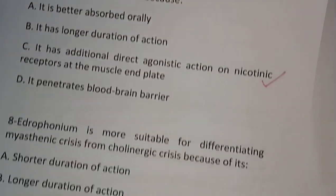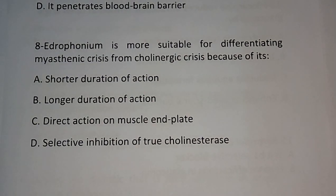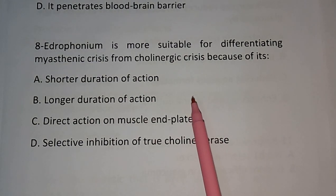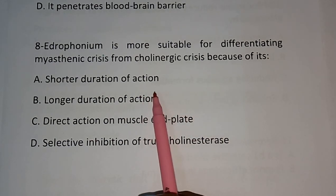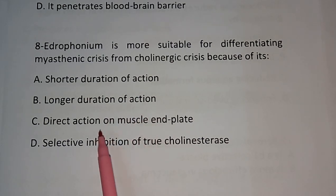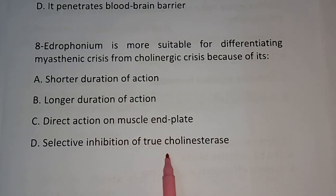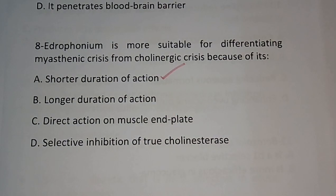Question number eight: Edrophonium is more suitable for differentiating myasthenia crisis from cholinergic crisis because — (A) it has shorter duration of action, (B) it has longer duration of action, (C) direct action on muscle end plate, (D) selective inhibition of true cholinesterase. The correct answer is shorter duration of action.